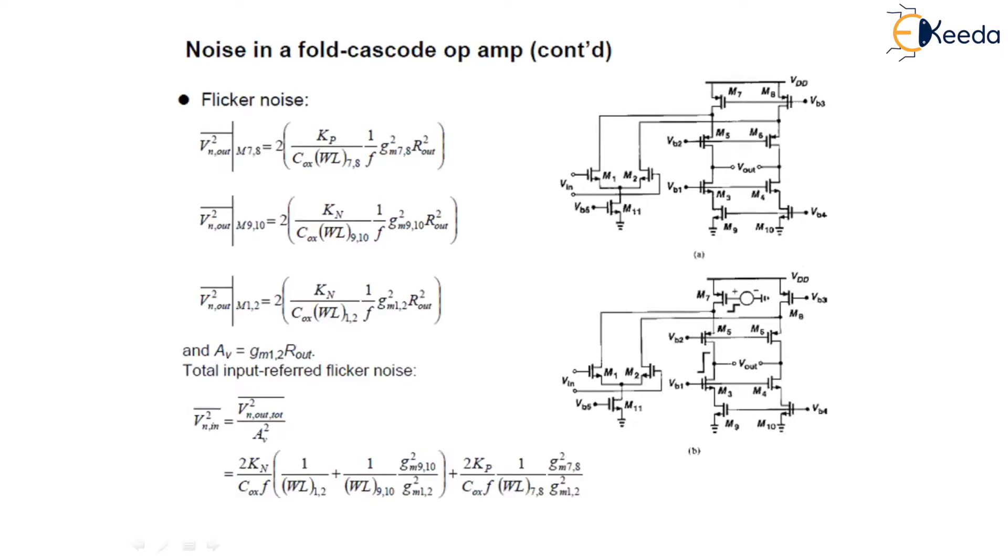Now the flicker noise is given as V²n,out in the case of transistor 7-8 is given as 2×Kf/(Cox×Wf)×(1/(WL)7-8)×R²out. Similarly, for transistor 9-10 the same equation with the subscript changed to 9-10, and similarly for transistor 1-2 with the subscript changed to 1-2. The gain is similarly Gm1-2×Rout.